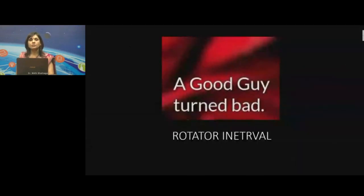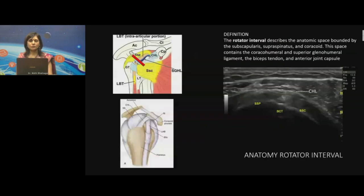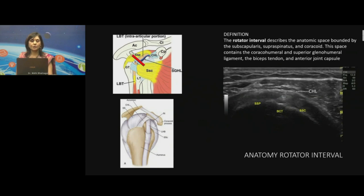If only the rotator interval would not have reacted to the inflammation of the capsule, we would still probably have shoulders that are not too bad. So the rotator interval: it is an anatomic space bounded by subscapularis, supraspinatus, coracoid, and superiorly the coracohumeral ligament. This space also contains the superior glenohumeral ligament.